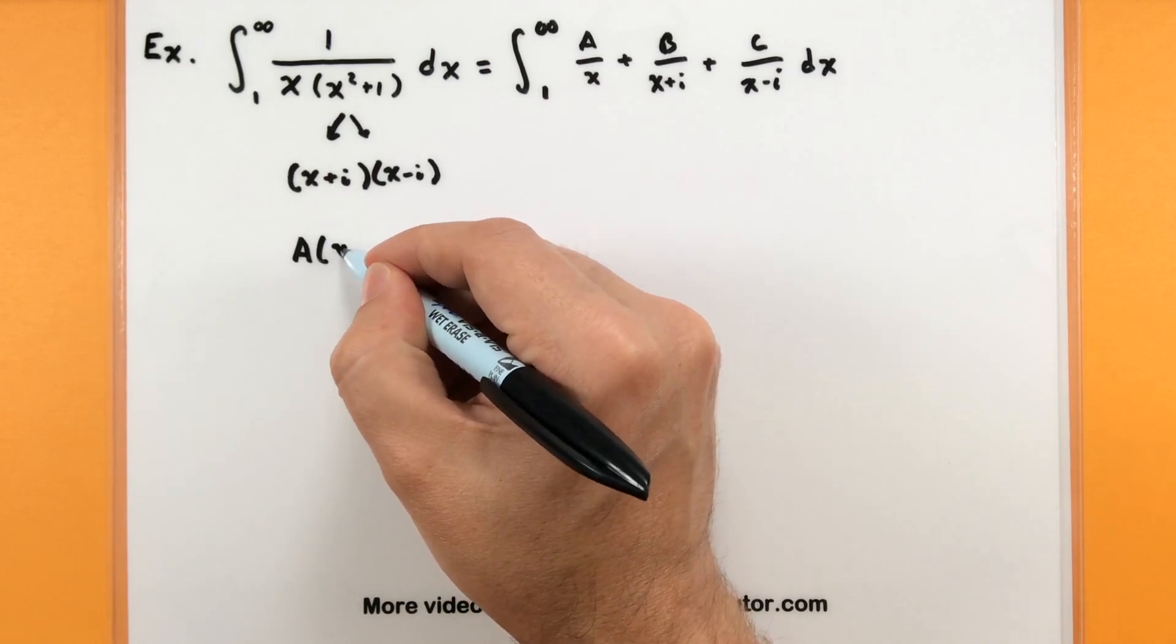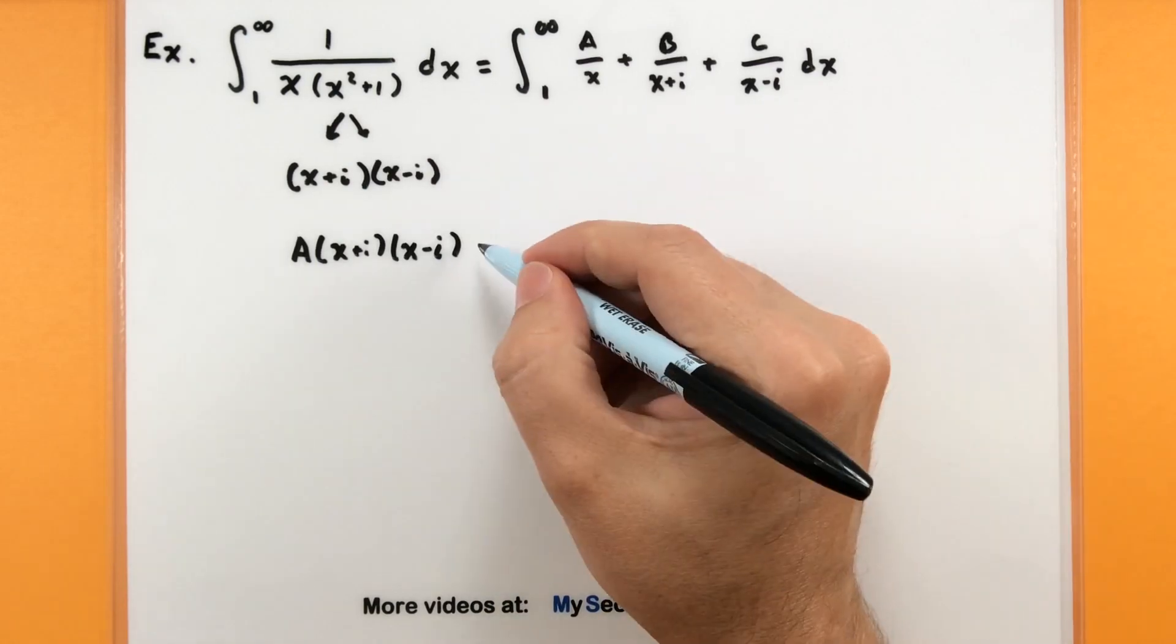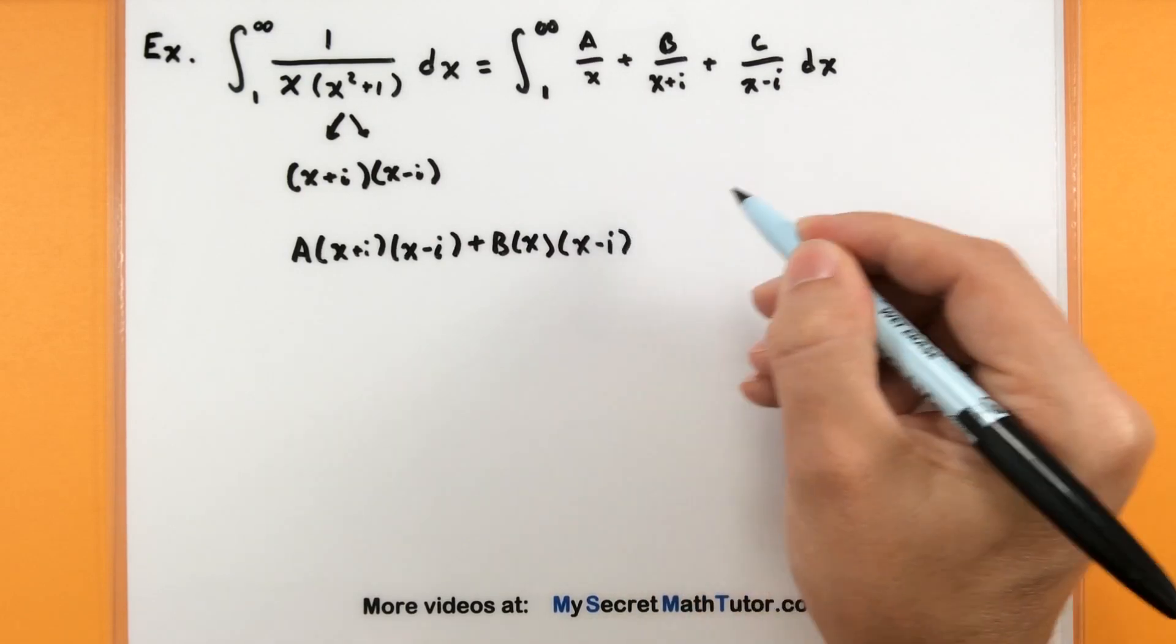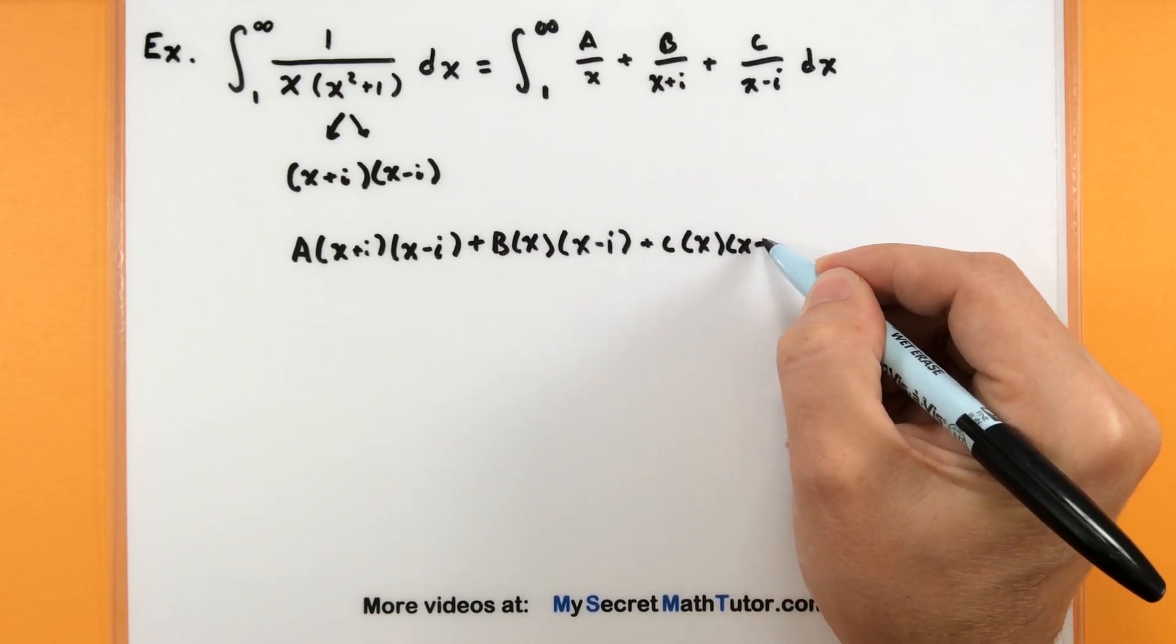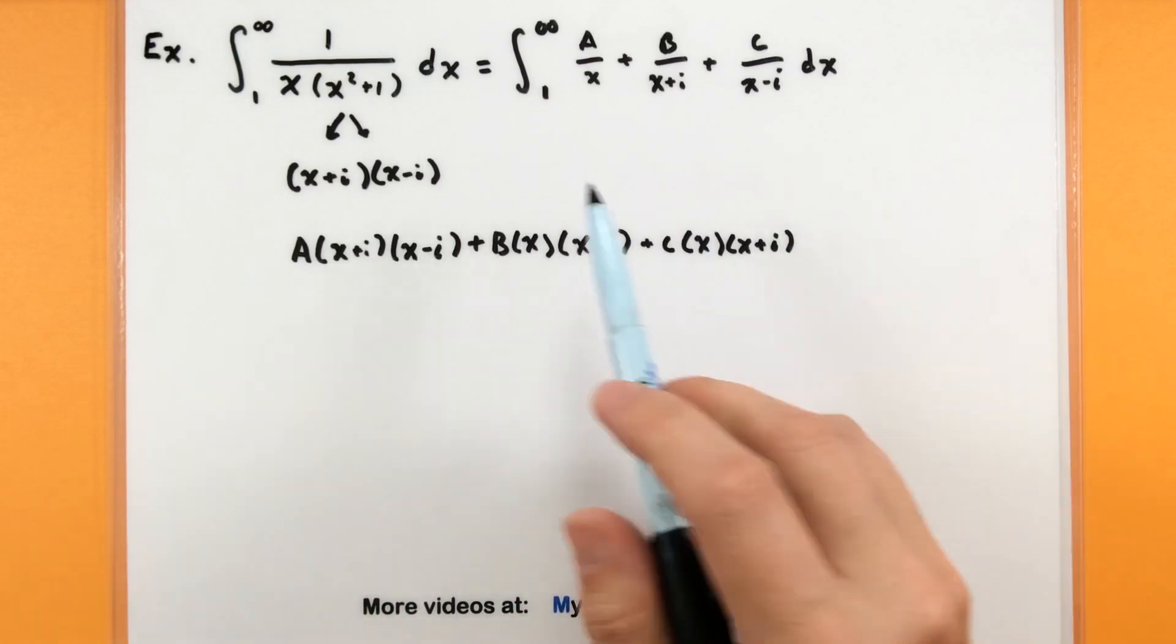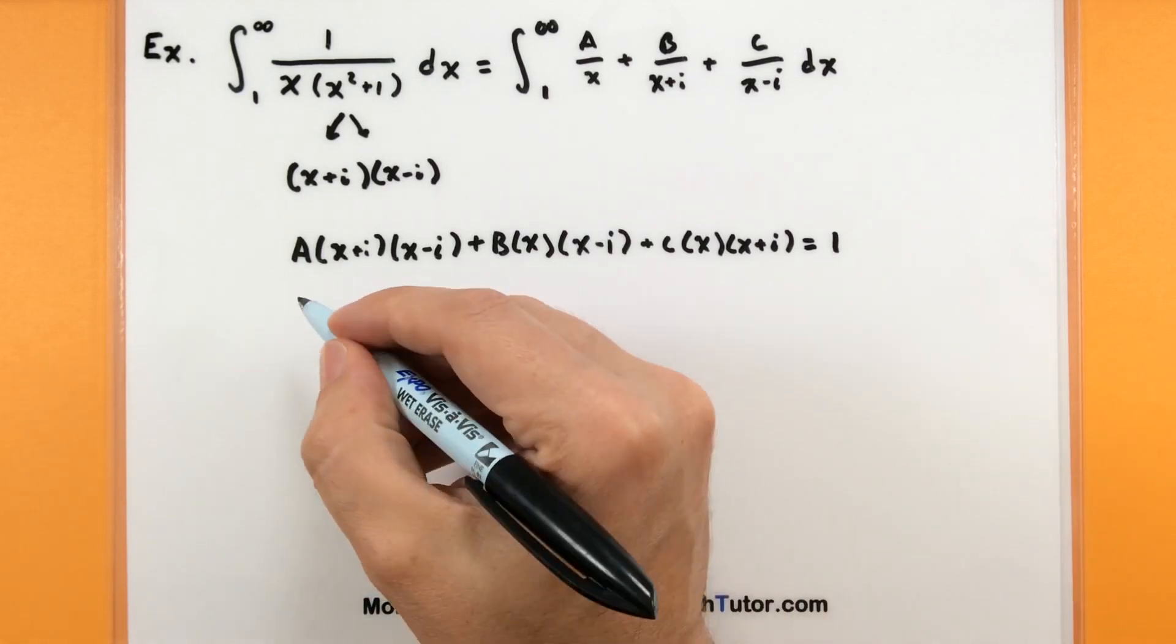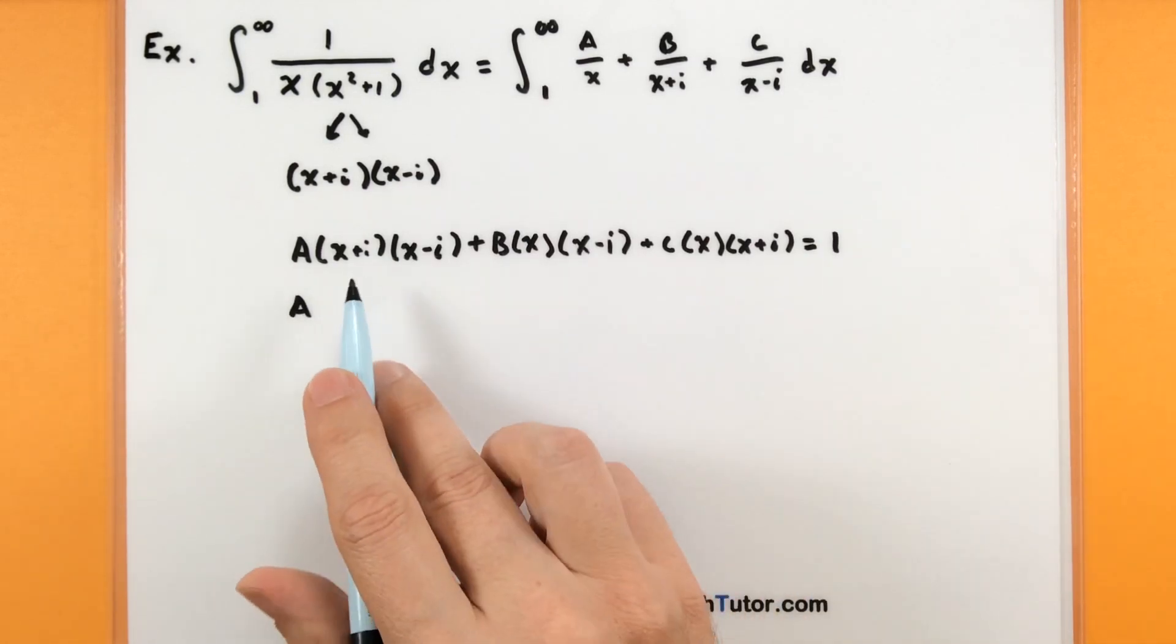So imagine taking our numerator there and we'll multiply it by the denominators that it's missing. So a will get multiplied by an x plus i and x minus i. The b will get multiplied by an x and x minus i. And c over there, we should multiply that one by x and x plus i. And of course, these represent all of our numerators when we put them together. So we need them to equal our original numerator.